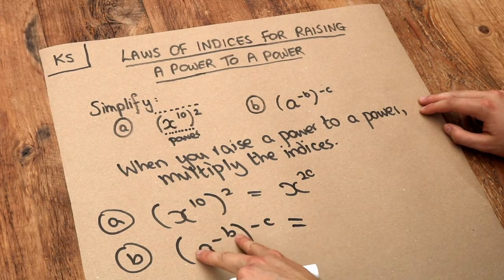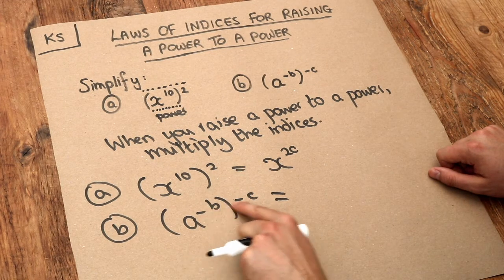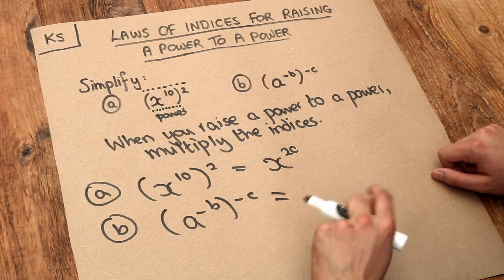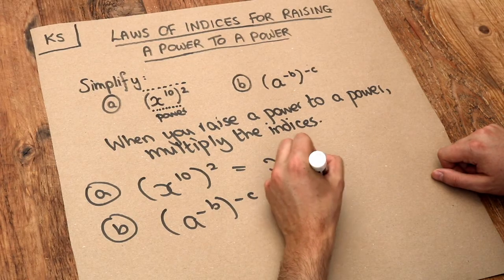We're raising a power, this, to a power. And all we do is we multiply the indices. So we do minus b times minus c. Negative times negative is positive. And that's going to be positive bc. So it will be a to the power of bc.